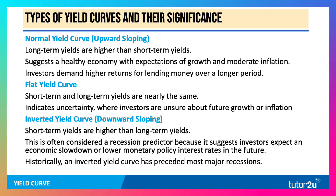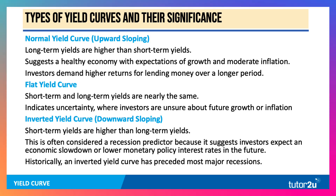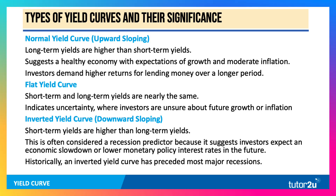Inverted yield curves are downward sloping, where the short-term yields are higher than long-term yields. This is often — not always — considered a recession predictor, because it suggests that investors expect either an economic slowdown or lower monetary policy interest rates in the future, as central banks cut interest rates to try and stimulate the economy and prevent a damaging downturn. Historically — and of course the past is not always a guide to the future — the inverted yield curve has preceded most, but not all, major recessions.